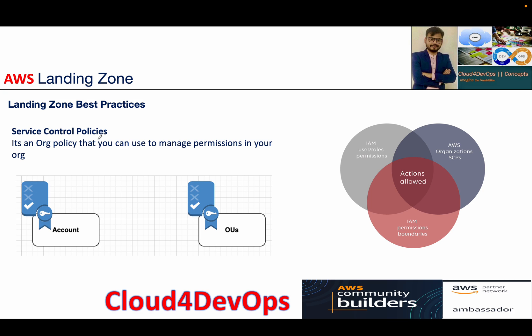Hey everyone, welcome to the fourth lecture of AWS Organizations and Control Tower series. In this lecture, we will focus more towards the best practices followed by landing zone, and one of them is service control policies. I'm not going to deep dive into SCPs because there is a detailed lecture coming up in this series after completing the Control Tower demo. I have covered one part of SCP as part of my demo in AWS Organization.